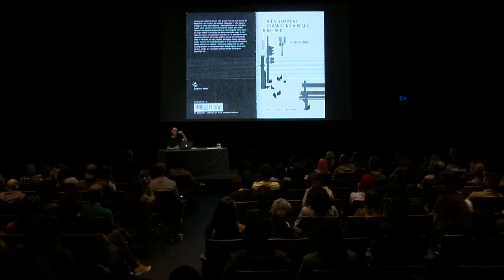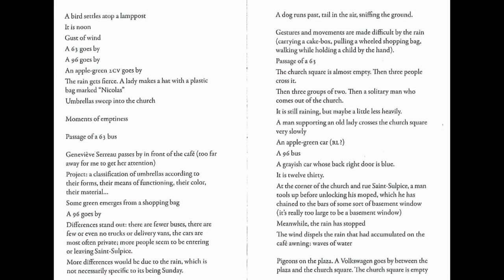Intelligence can involve a whole crowd of people. In 2014, I read a book by the experimental French writer Georges Perec called An Attempt at Exhausting a Place in Paris. He sat on a bench in Paris for three days in 1974 and tried to transcribe everything happening in exquisite detail — his writing feels like a very human act of observation. For example he writes: 'The rain gets fierce, a lady makes a hat with a plastic bag... some green emerges from a shopping bag, the church square is almost empty, three people cross it... an apple-green car, a number 96 bus.' He loved noting every single bus whenever there was a number on it.